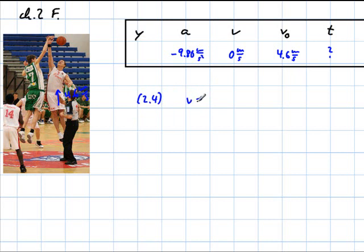Which says v equals v0 plus at because the velocity is 0 at the peak. That's the way it looks like.